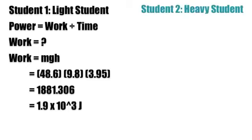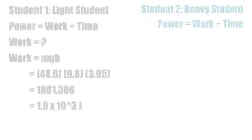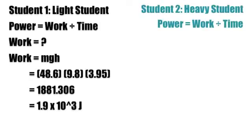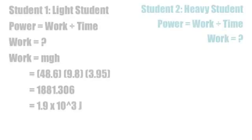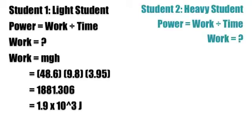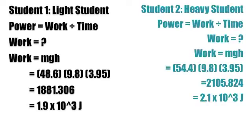Now we do the same for student two, our heavy student. Power equals work divided by time, but we don't have work, so we use the same equation: work equals mass times gravity times height. The result is 2.1 times 10 to the 3 joules as the work for student two.